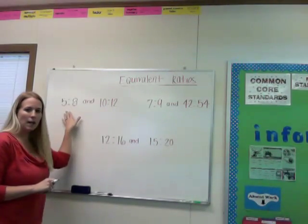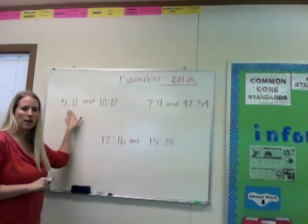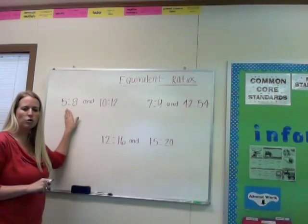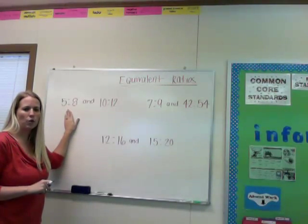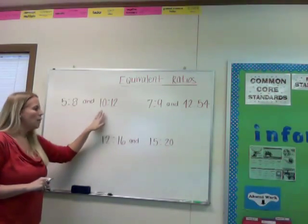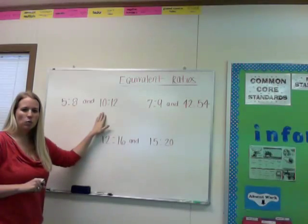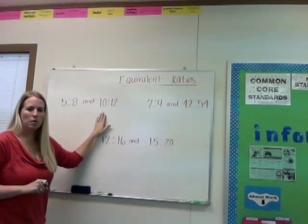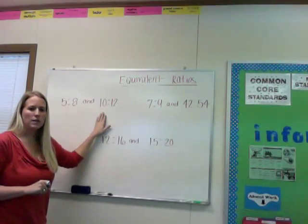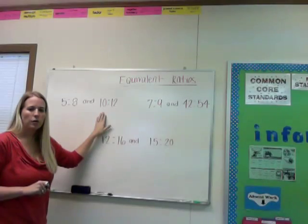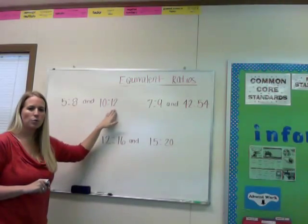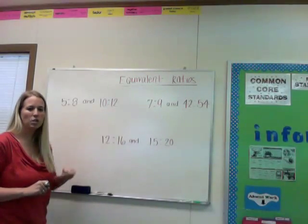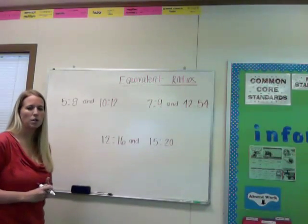In this case, 5 to 8 is already in simplest form. There's no number other than 1 that can go into both 5 and 8. However, with 10 and 12, it's not in simplest form. There is a number that can go into both 10 and 12. Since they're both even, I'm going to start off by using the number 2.